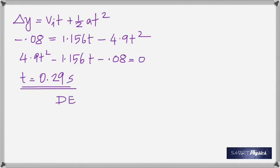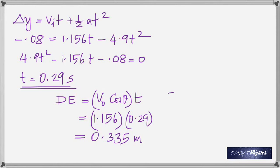Now knowing that the horizontal component of the velocity is a constant, which is v naught cos theta, you just multiply it with the time to give you that distance DE. So you get the distance DE as 0.335 meters.